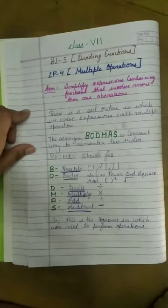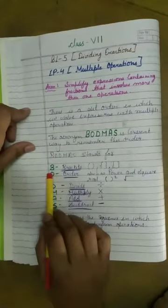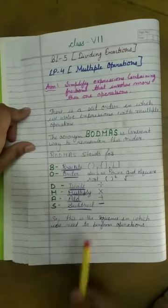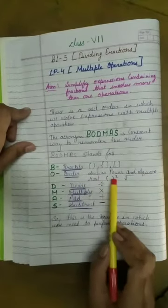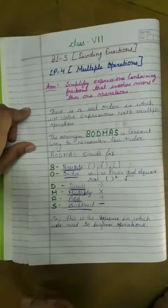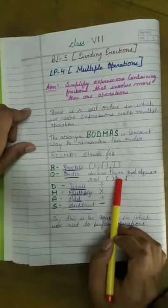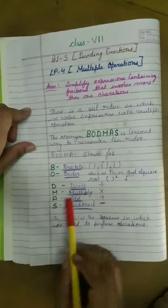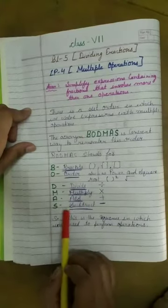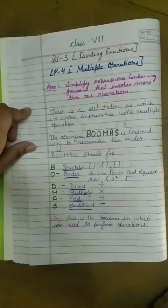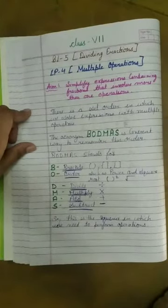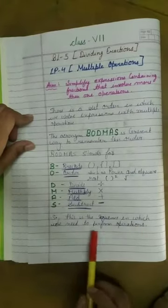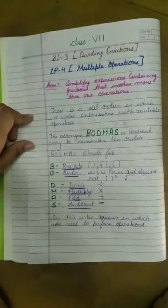BODMAS stand for: B stand for bracket, different type of brackets we have to solve firstly. O means order, such as powers and square root. Then we have to solve power and squares. D stands for divide, we have to divide the expressions and then multiply, then addition and then subtraction. So this is our BODMAS rule. We have to simplify the equations or expressions using BODMAS rule. This is the sequence in which we need to perform operation.